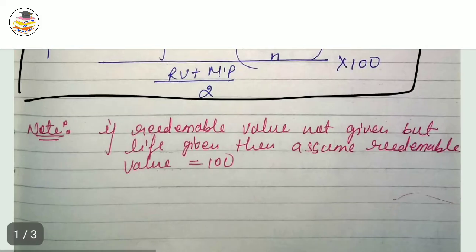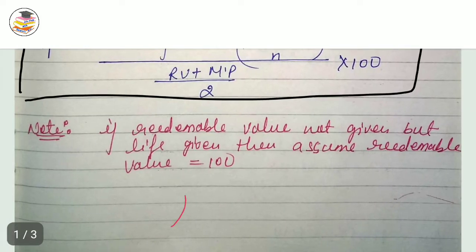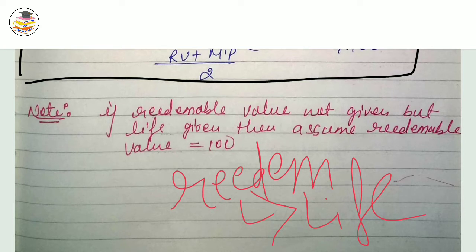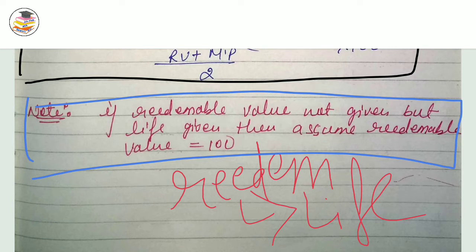Redeemable meaning is that the instrument has a given life — it will be redeemed at the end of that life. It will also be redeemed at a specified value, for example 100 rupees or 110 rupees. But if redeemable value is not given and only life is given, then in that case we will assume redeemable value is equal to 100.